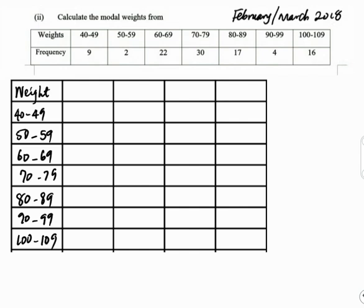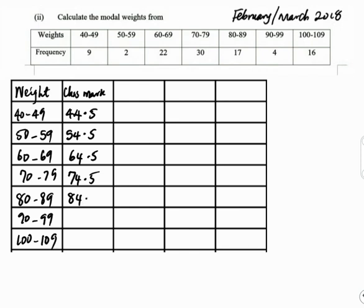The next step is to find the class mark, which is the average of each class interval. So we have: (40+49)/2 = 44.5; (50+59)/2 = 54.5; (60+69)/2 = 64.5; 74.5; 84.5; 94.5; and 104.5.